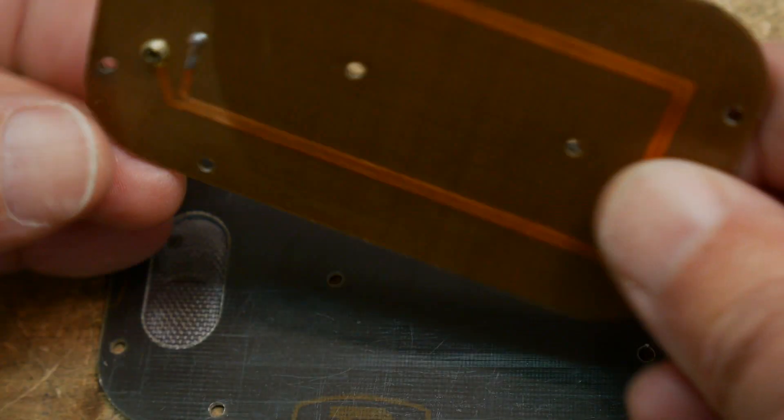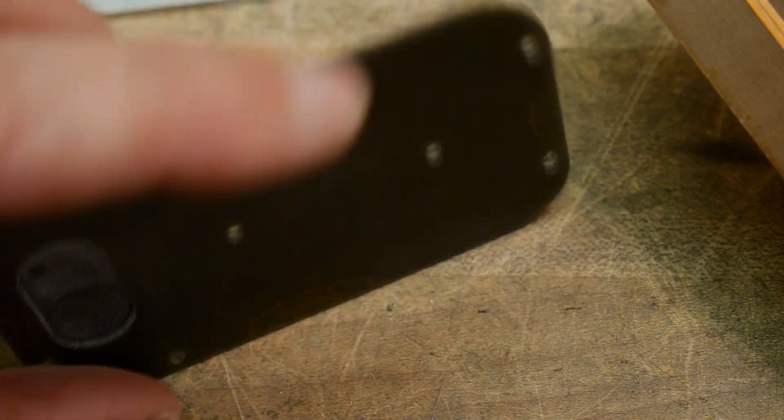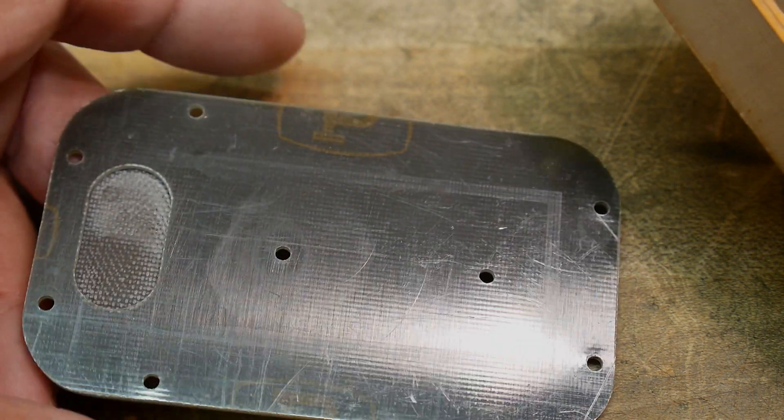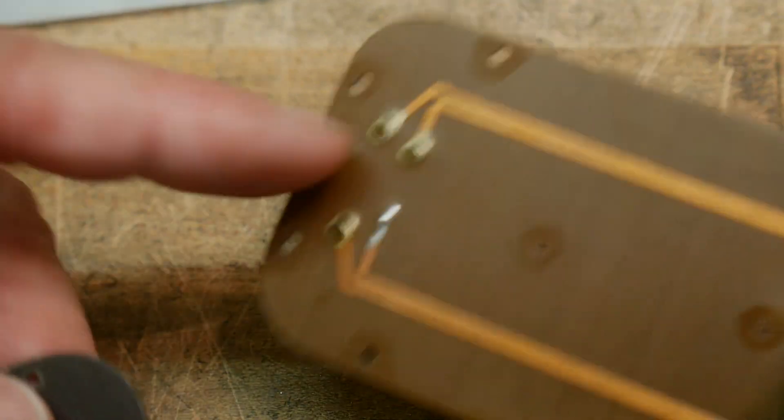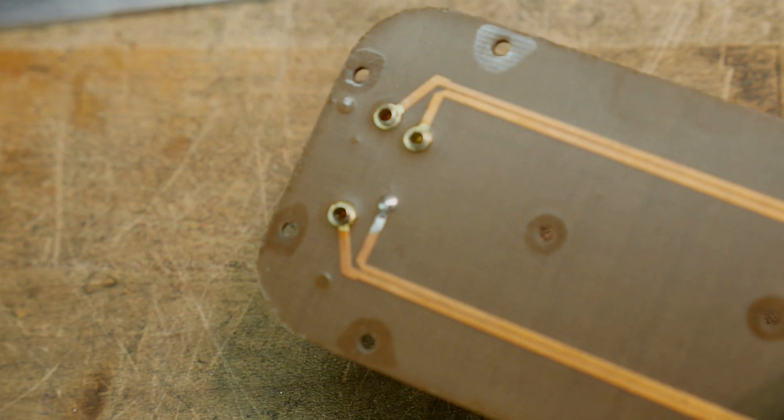Open it up, so this part here does nothing, it's just metal. Okay, and it's just shielding. That big piece of metal is to shield it from other things. It's got this little cut out here just to relieve these studs here.